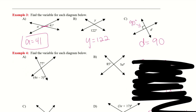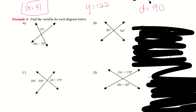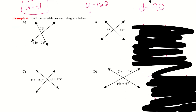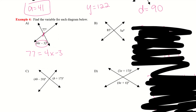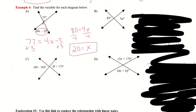Let's take a look at example 4. I'm going to do examples A and C, and then you'll try B and D. For 4A, we have vertical angles, so they are equal to one another. Even though 4X minus 3 is a whole expression, they still equal. I'll add 3 to both sides: now I have 80 equals 4X. Divide by 4 — X equals 20.